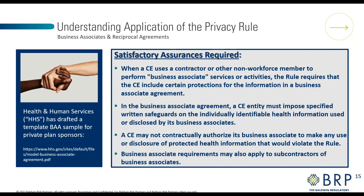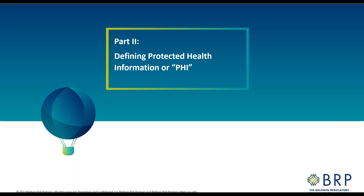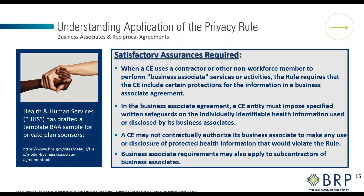When working in a business associate relationship, covered entities are required to include specific protections in the business agreement. The covered entity must impose written safeguards on the individually identifiable health information used or disclosed by its business associates. A covered entity may not contractually authorize its business associate to make any use or disclosure of PHI that would violate the rule. Every requirement given to the business associate also applies to those business associate's subcontractors.